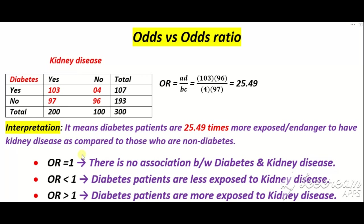Overall interpretation: odds ratio کی value تین types کی آ سکتی ہے۔ اگر odds ratio 1 کے برابر آئے تو there is no association between diabetes and chronic kidney disease. اگر odds ratio 1 سے less آئے تو it means diabetes patients are less exposed to kidney disease. اگر odds ratio 1 سے exceed کرے تو it means diabetes patients are more exposed and more in danger of having kidney disease as compared to those who are non-diabetic.